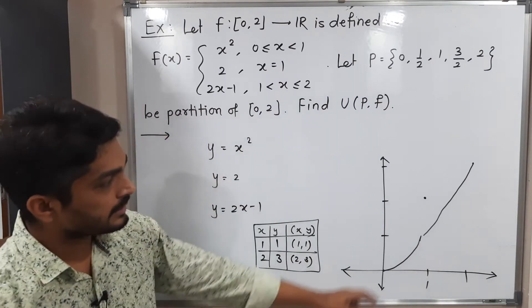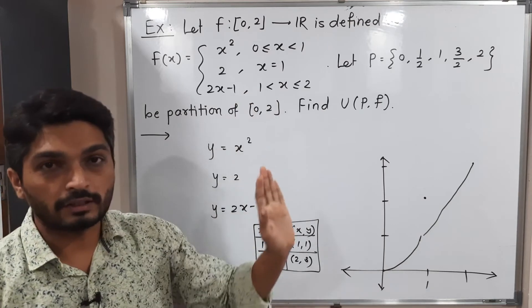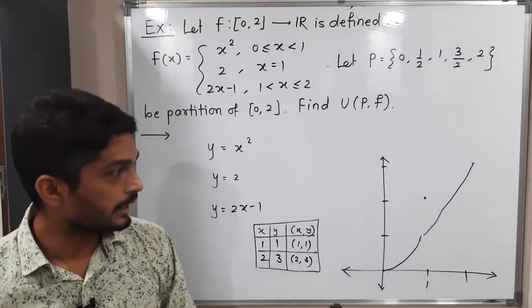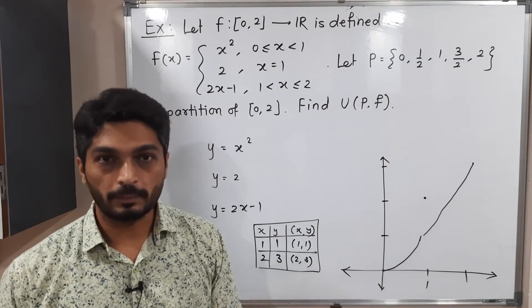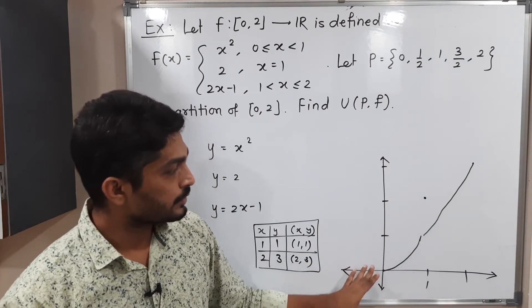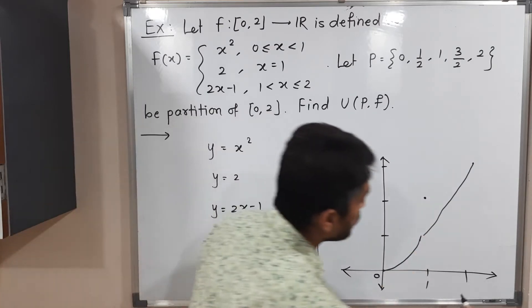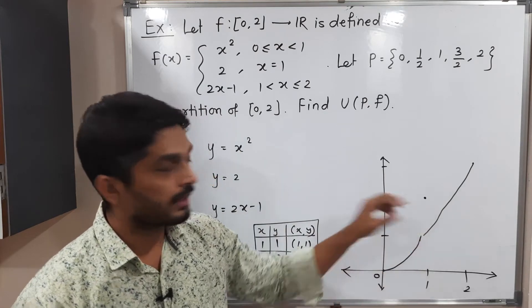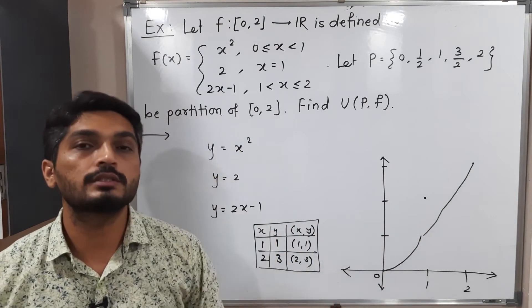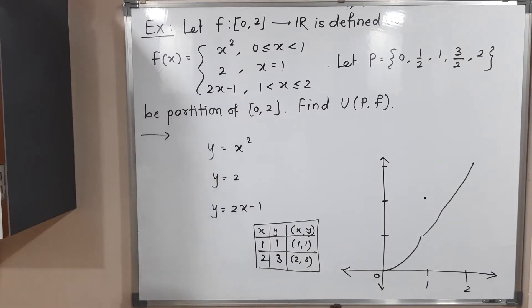There is a gap in the graph at x=1 for the line, since x is strictly greater than one for this piece — we cannot draw the line at x=1. So for [0,1) we have a parabola, at x=1 we have a single point (1,2), and for (1,2] we have a straight line. This is the complete graph of the given function.